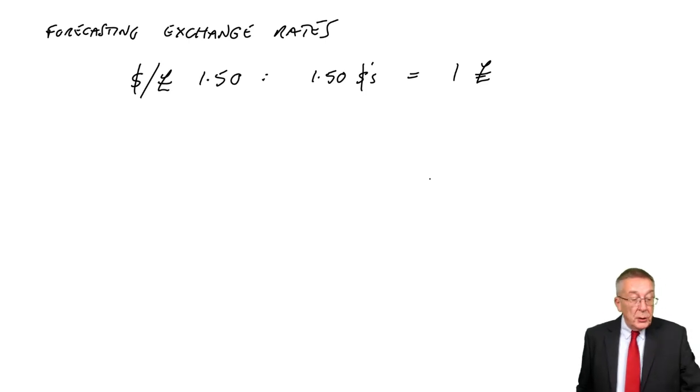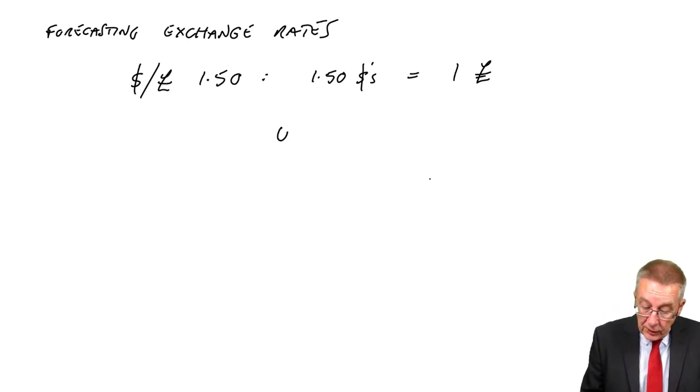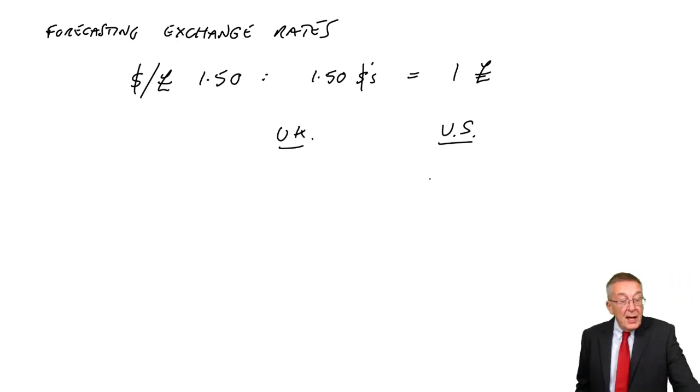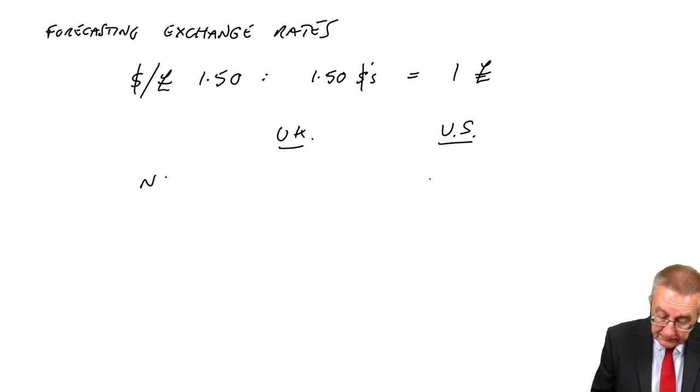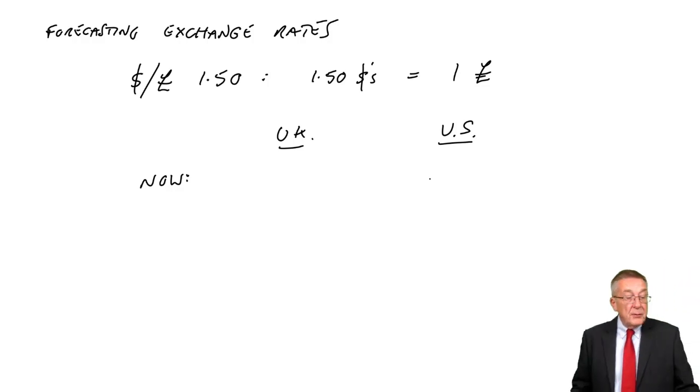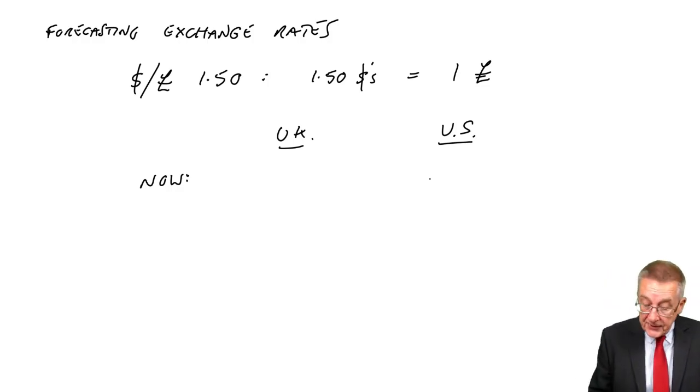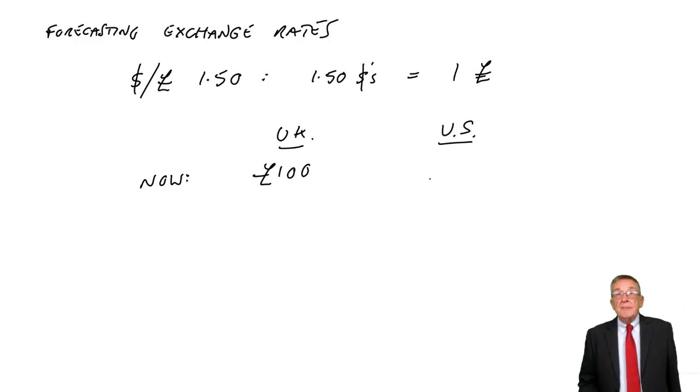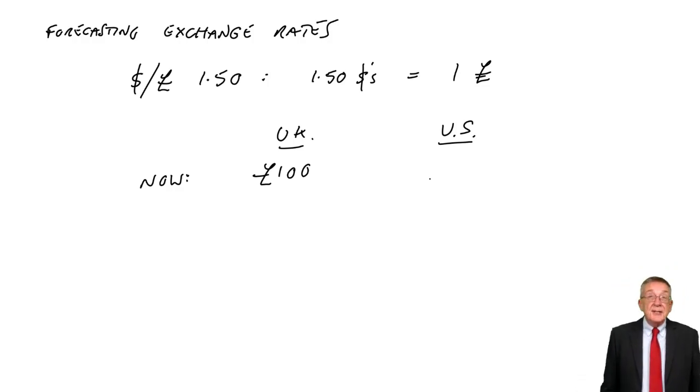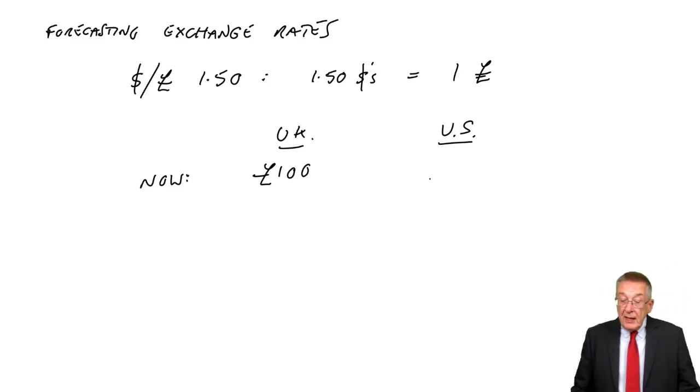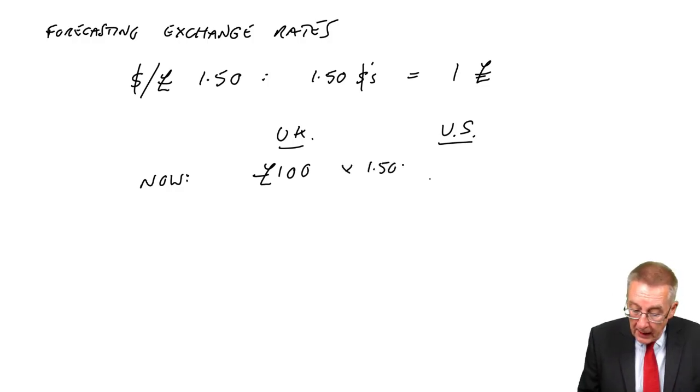Let's look at this illustration. UK, US. As of today, we have an item costing £100 in the UK. What would be the equivalent price in the US in dollars? If $1.5 is £1, then surely, in the US, the equivalent price would be $150.